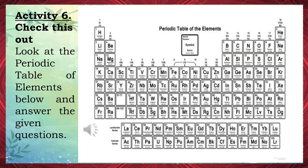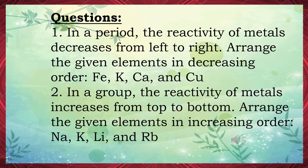Activity 6: Check This Out. Look at the periodic table below and answer the given questions. Number 1: In a period, the reactivity of metals decreases from left to right. Arrange the given elements in decreasing order — Fe, K, Ca, Cu. The correct answer is potassium (K), calcium (Ca), iron (Fe), and copper (Cu).